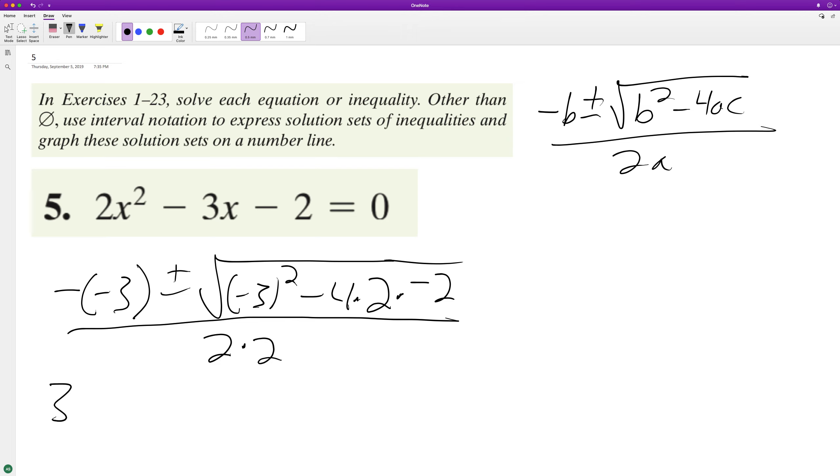All right, so then we end up with 3 plus or minus the square root of 9. This is 9, plus—well it's minus and then the negative 2 there makes it a positive 8, 16—so that's 25 over 4.